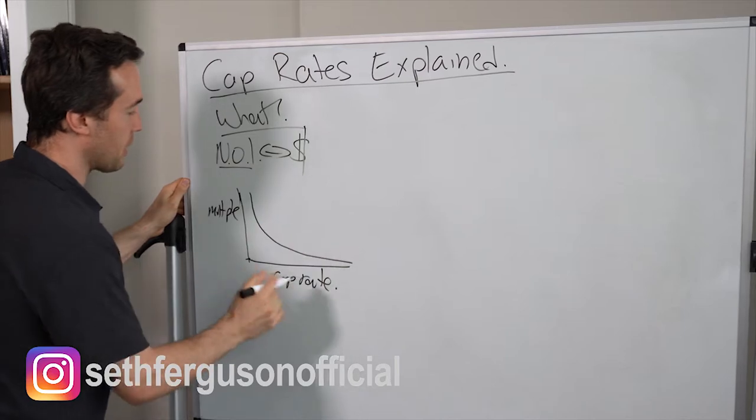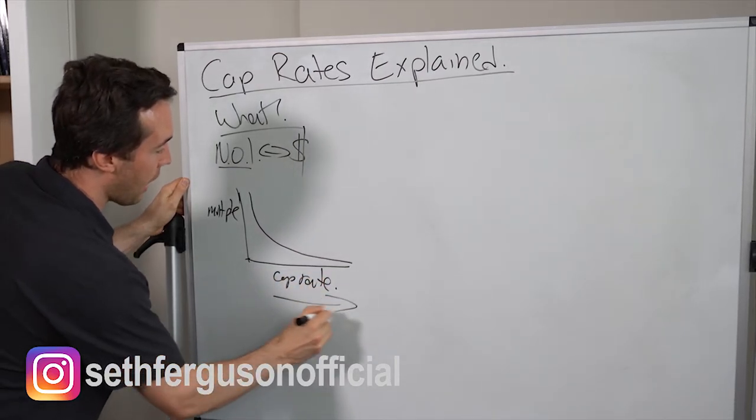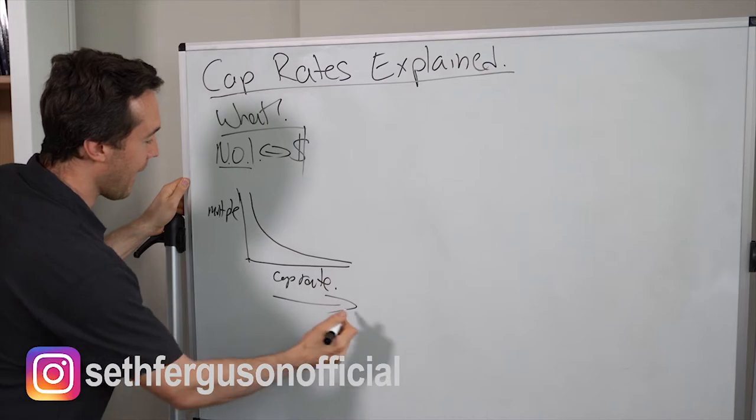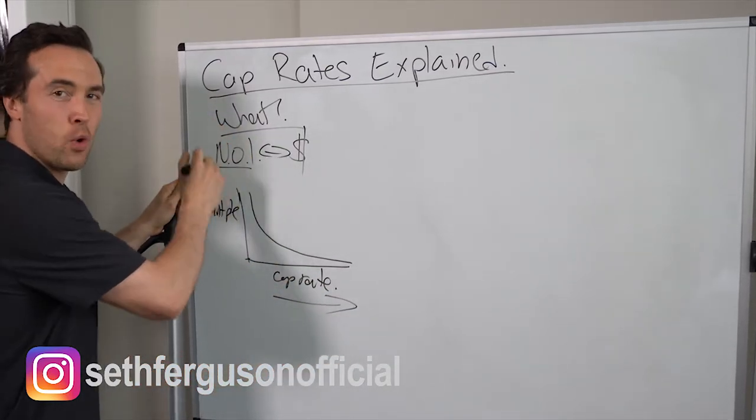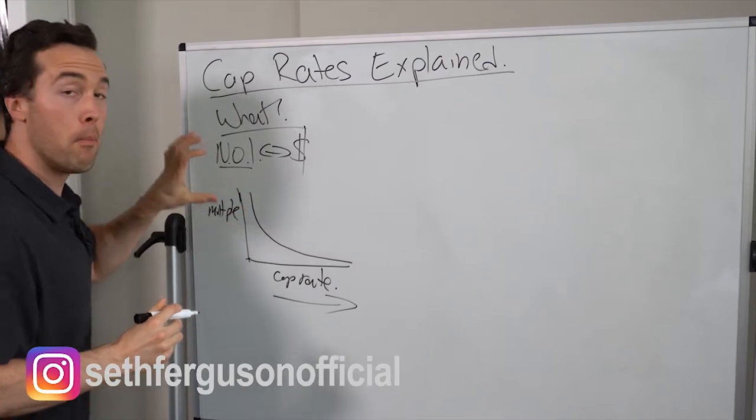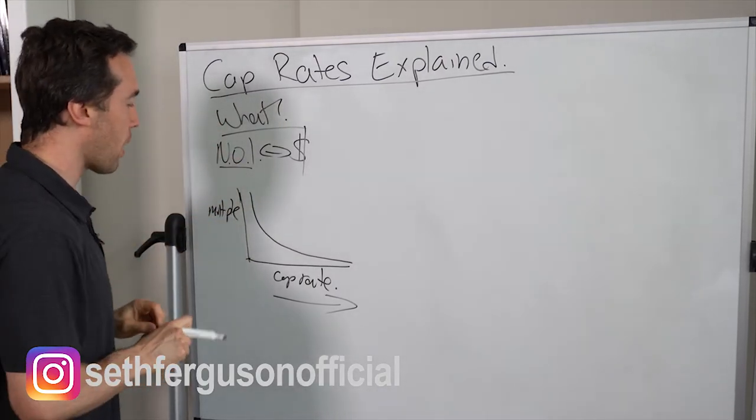Basically, what this is showing is the higher the cap rate, the lower the multiple paid. And the lower the cap rate, the higher the multiple paid on the NOI. So the market is paying more for every dollar produced of NOI for this property.